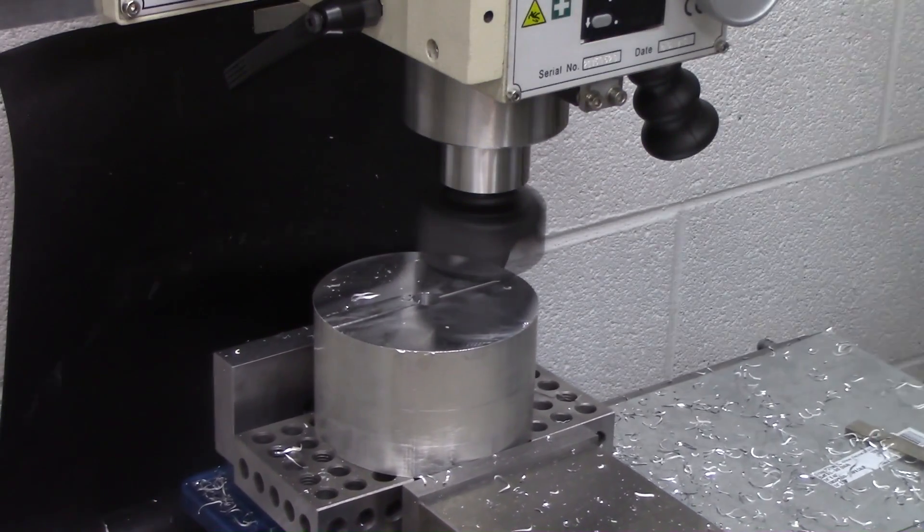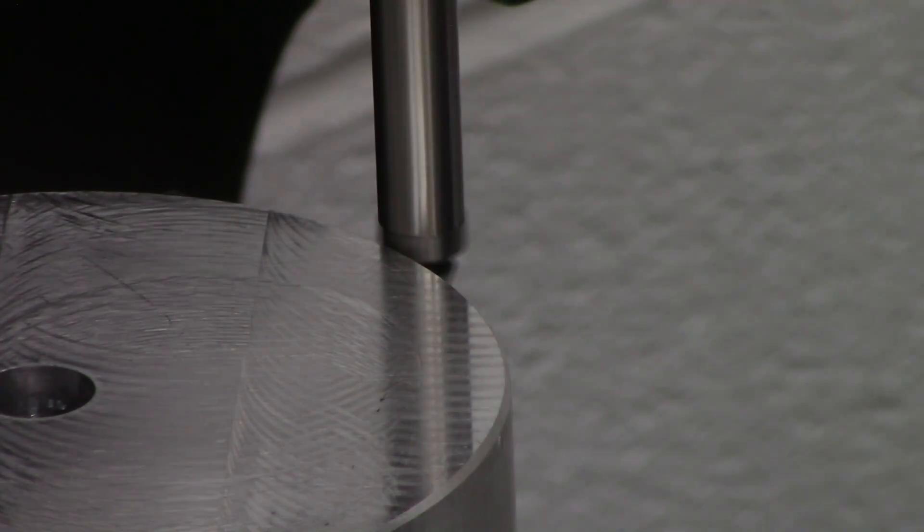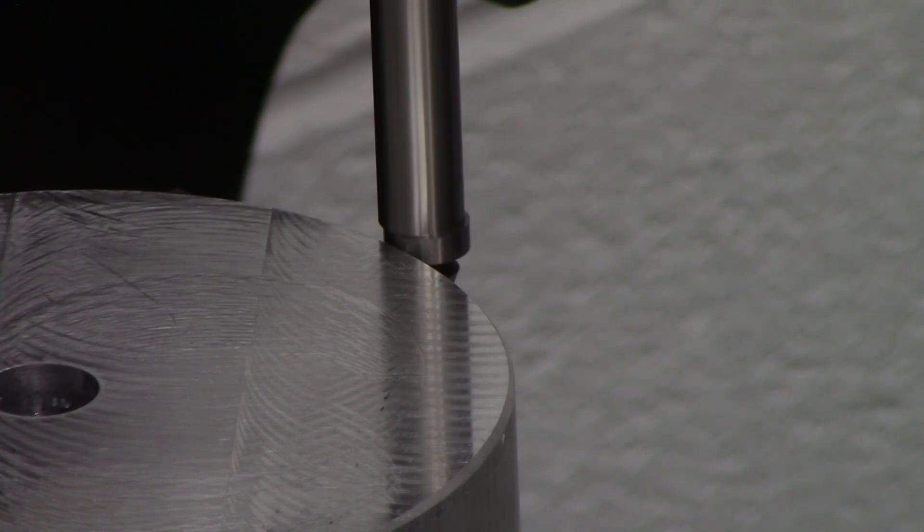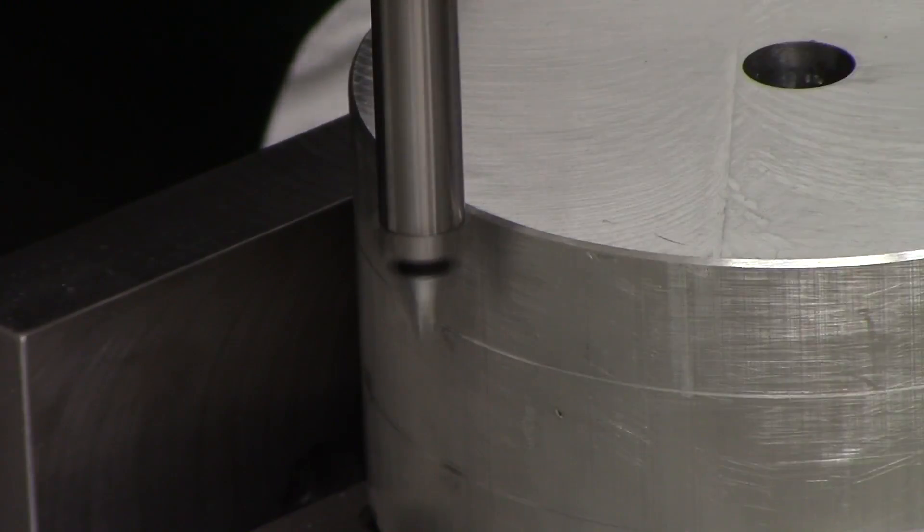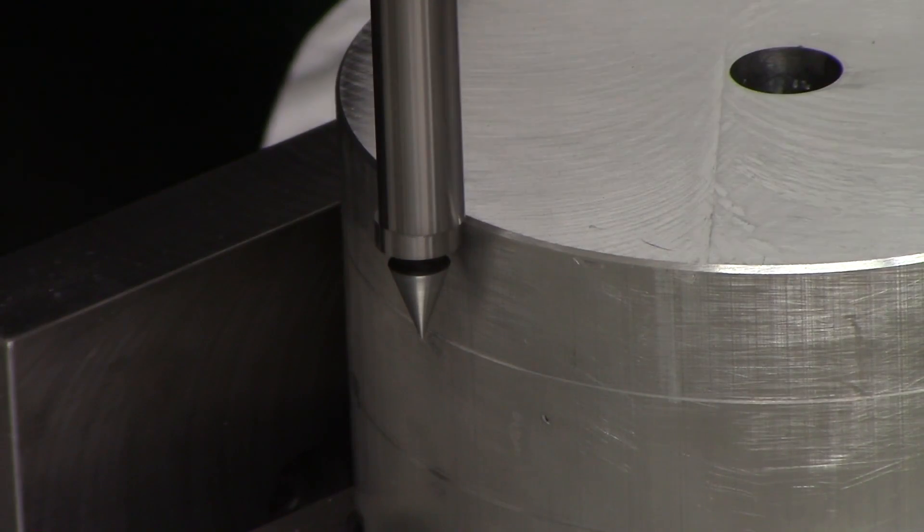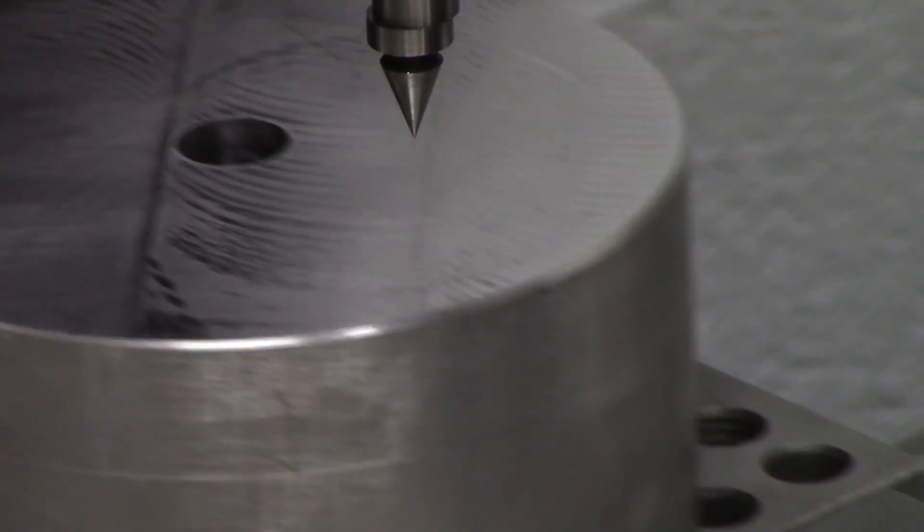After that I had to find the center again so I used a more traditional method. This is just a standard center finder and all you do is move the table until the center finder jumps off axis. Then you set your DRO, move to the other side, repeat the same process and divide by 2 and you've got your center.